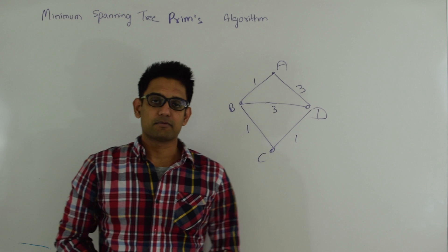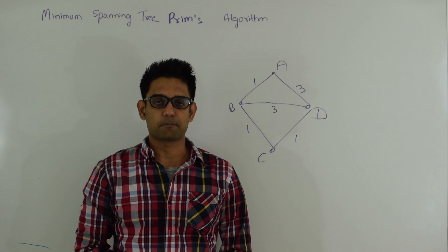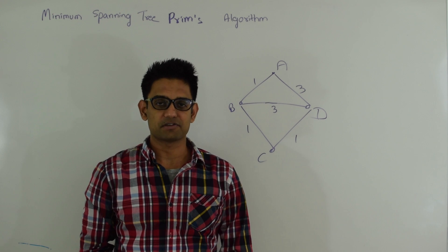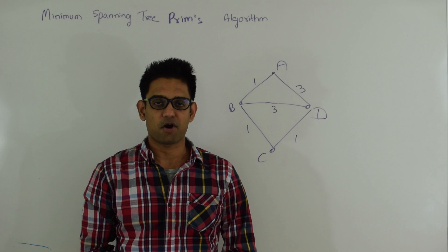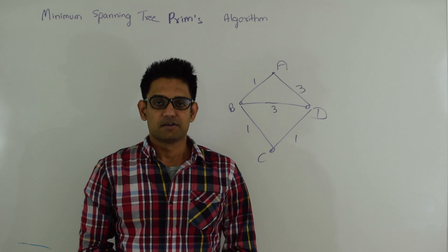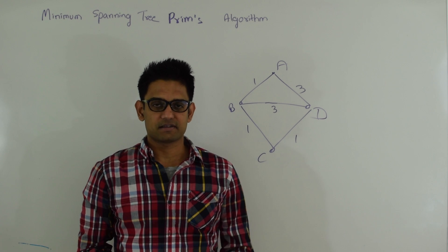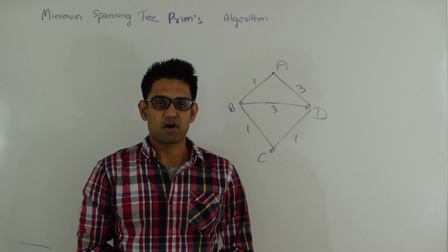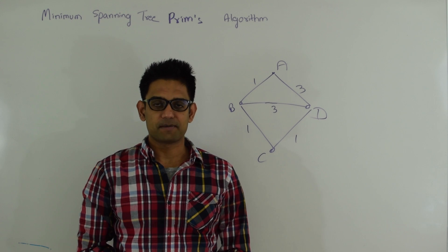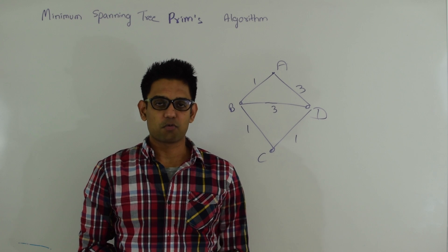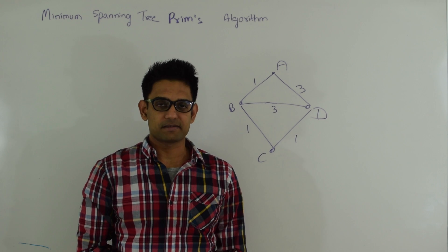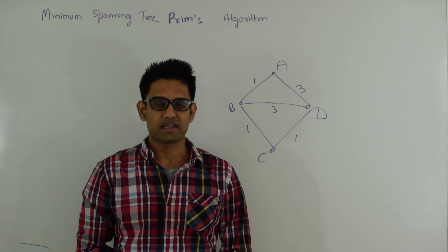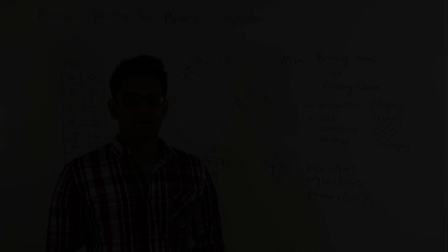For Prim's algorithm we need a binary heap which supports decrease-key operation and which also supports contains and find operations. In the next section let's quickly look at this data structure before talking about Prim's algorithm. Also if you don't know what a binary heap is, I highly recommend you read about binary heap before watching this video.